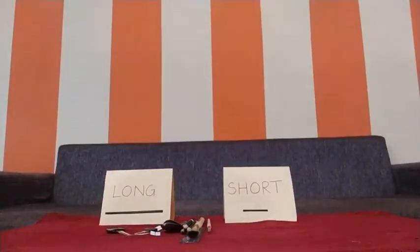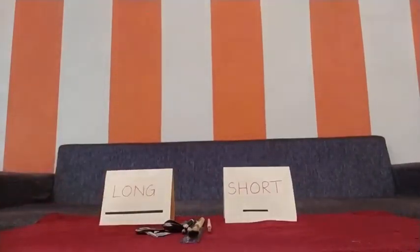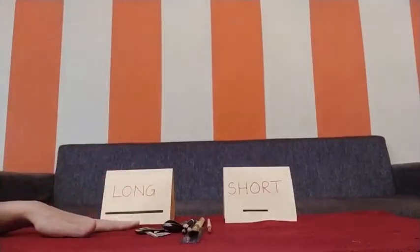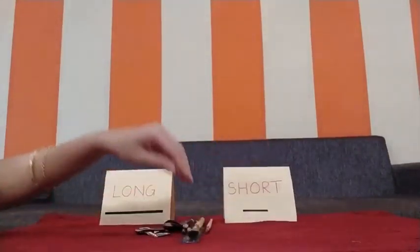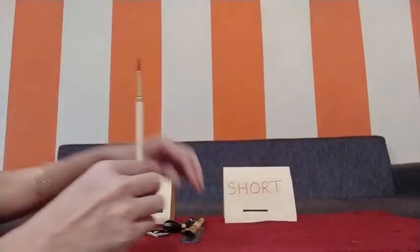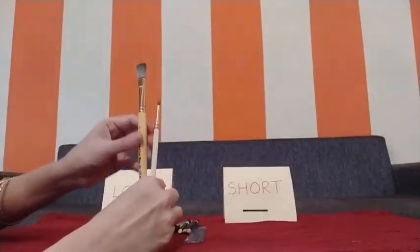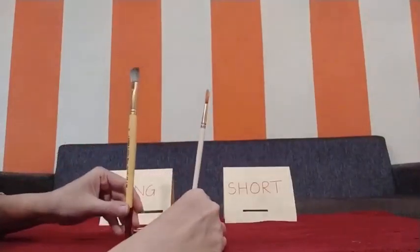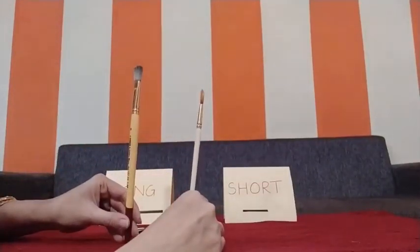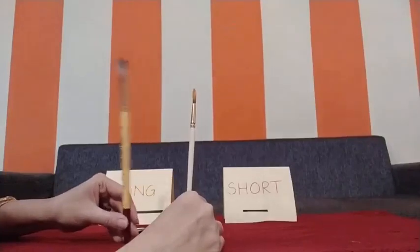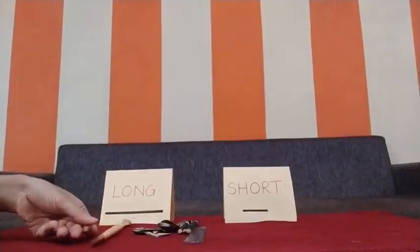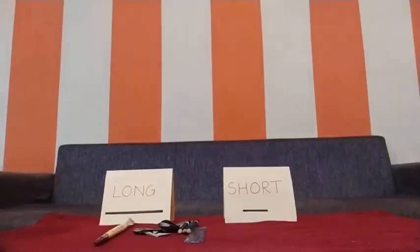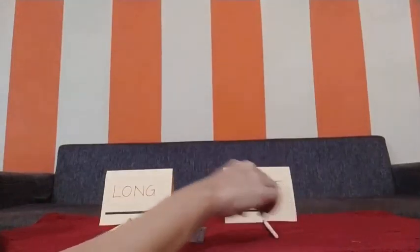Let us see few objects. We will place them — the long things will come under long and the short things will come here. Now let us first see. Look at these two brushes. Which one is long and which one is short? This is long, so I will keep it next to long. And now this is short, so I will keep it next to short.